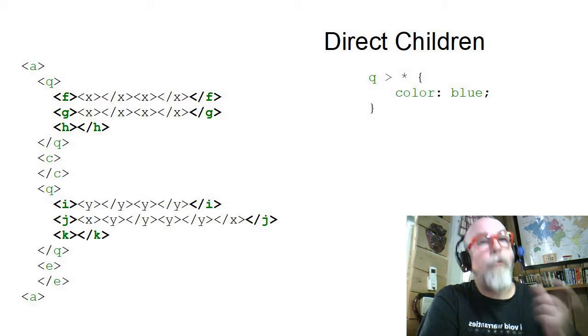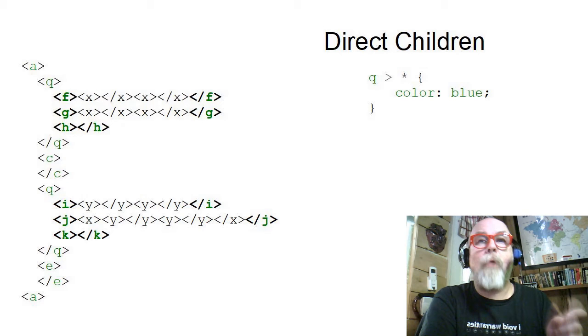But notice it didn't get the grandchildren. It didn't get all the X and Y tags. It only got the direct children, the F, G, H, and the I, J, K within the two Q tags, direct children.